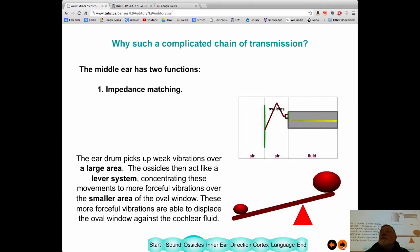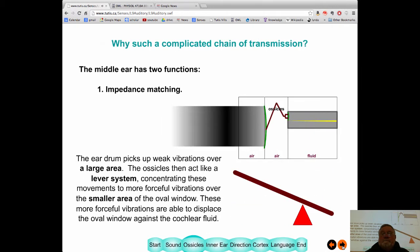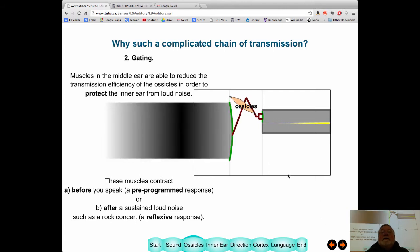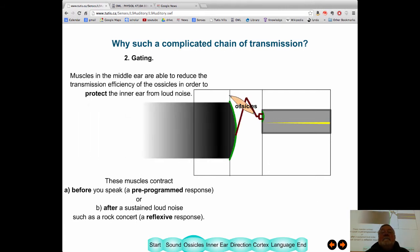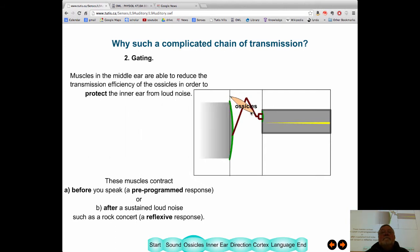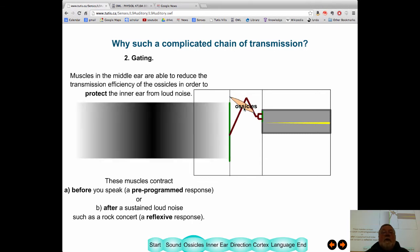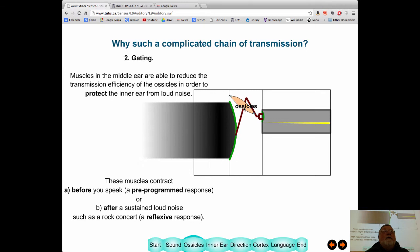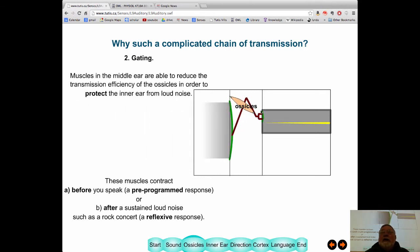So, that's what impedance-matching is. The other thing these things do is they do something called gating. So, attached to these bones are these muscles. And you can contract these muscles under two conditions. One is when you, before you speak, every time, just before you speak, these muscles contract.